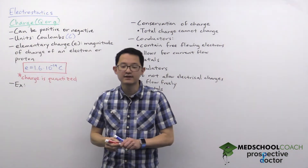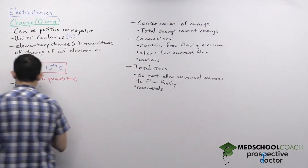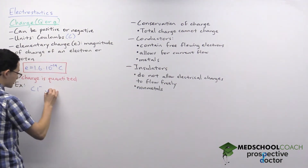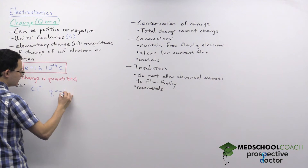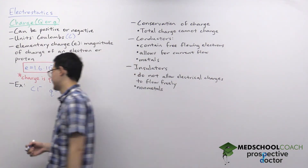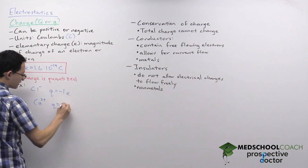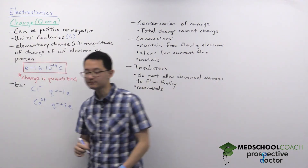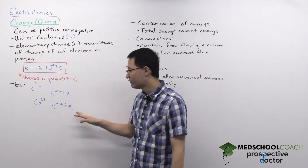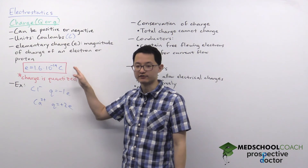For instance, we can consider a few examples. If we're looking at a chloride anion, Cl-, we would say that it has a charge of negative 1e. If we were to take a look at another ion, for instance a calcium cation, we would say that it has a charge of plus 2e. So the charge that any atom or object has is always some integer multiple of e, the smallest quantity of charge possible.